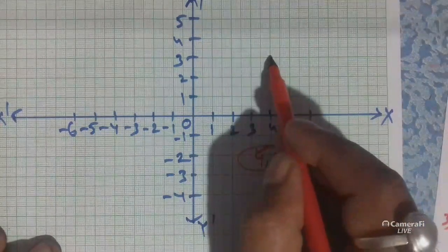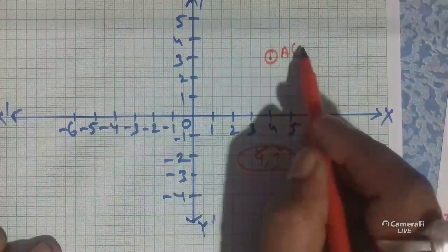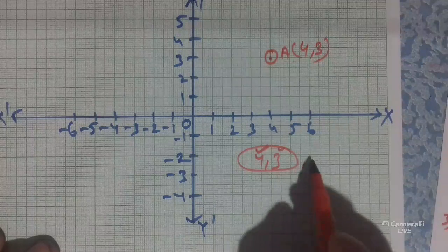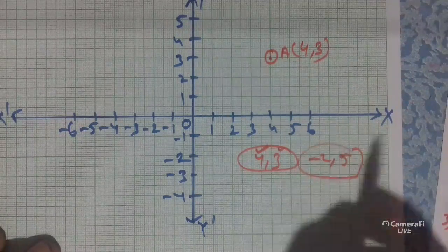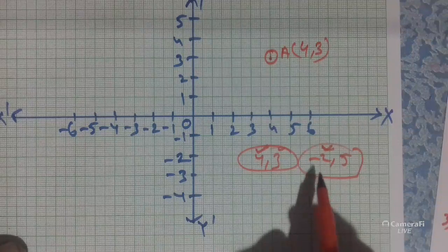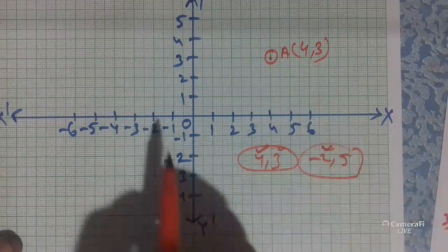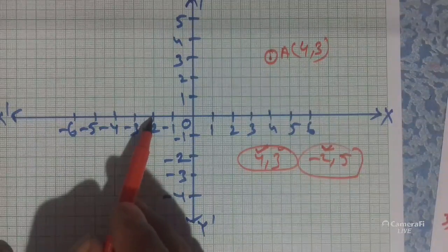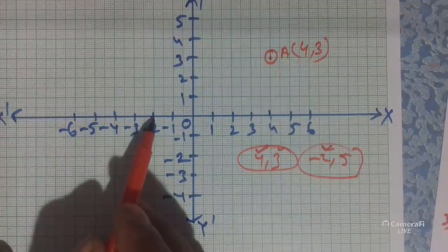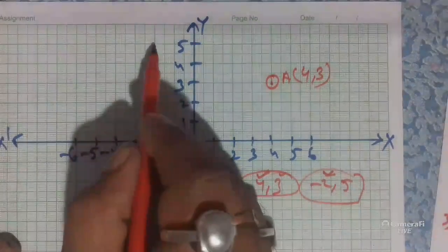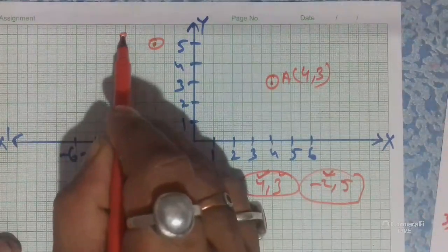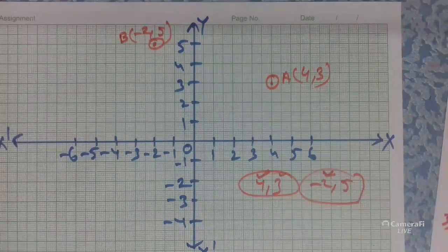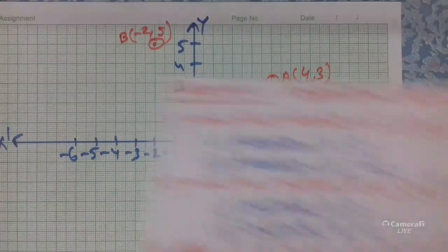I hope you understood. Now for Problem 3, we have to plot some points. The first point is A(4,3) and the second is B(-2,5). To plot these points, we need to take a graph paper.